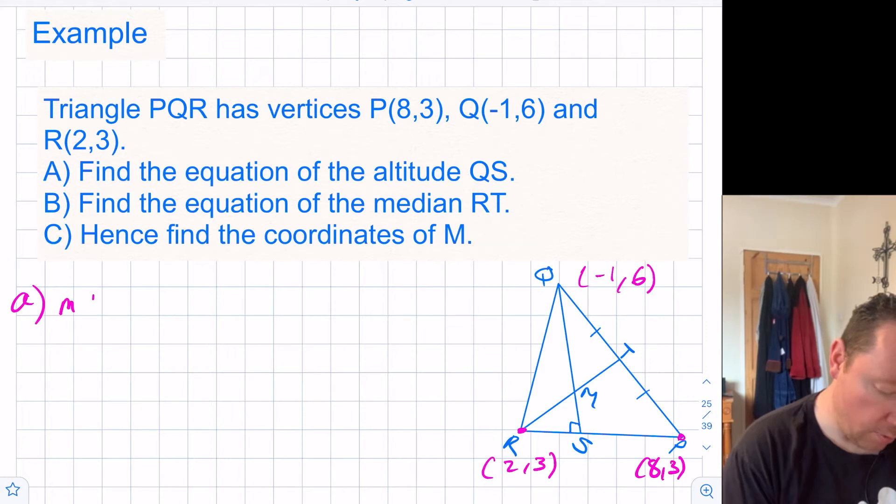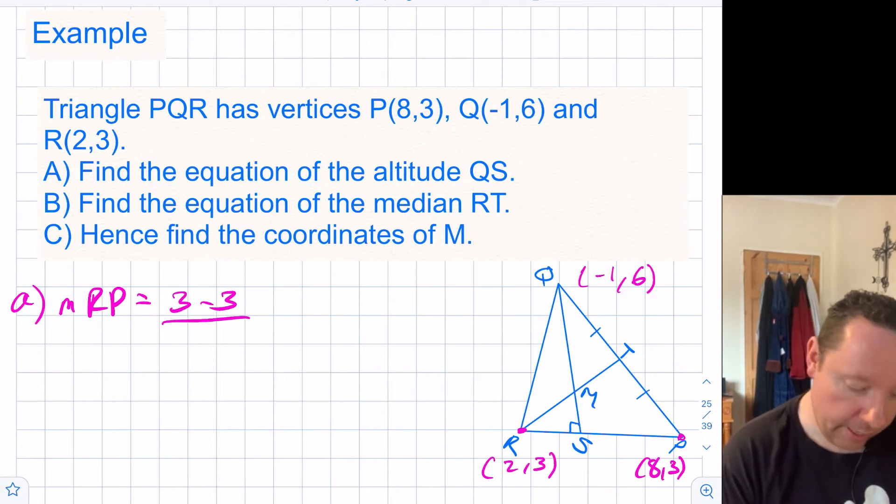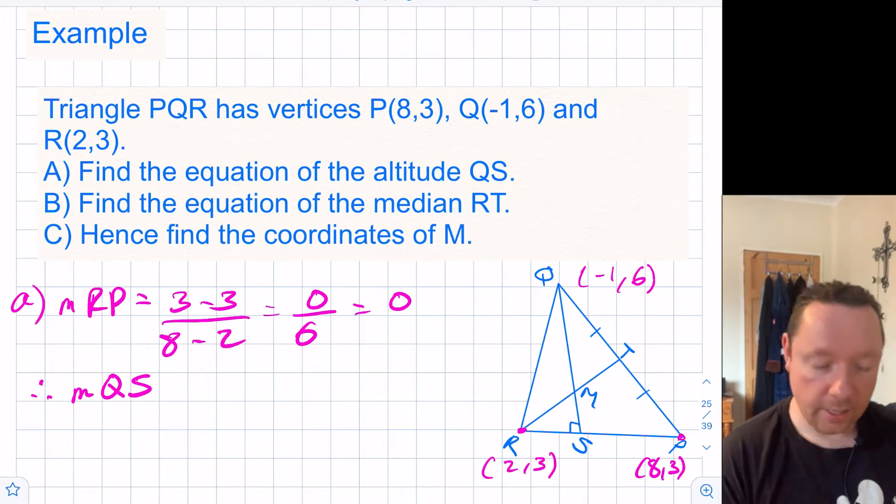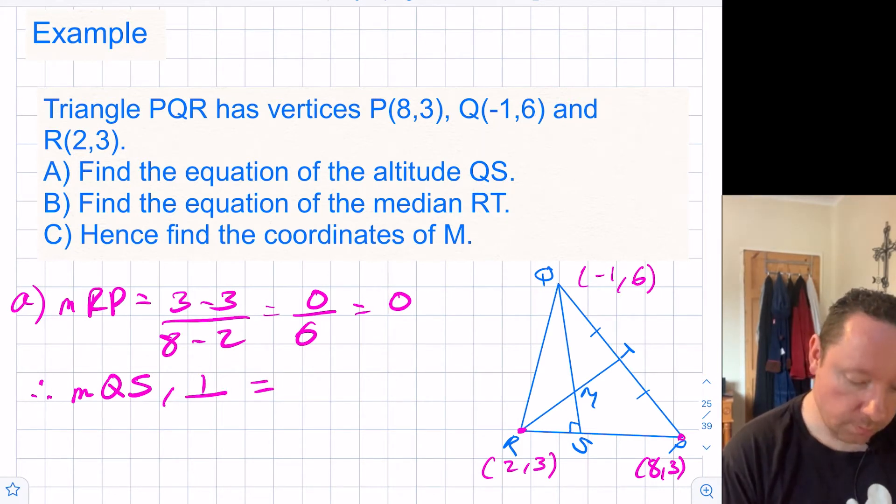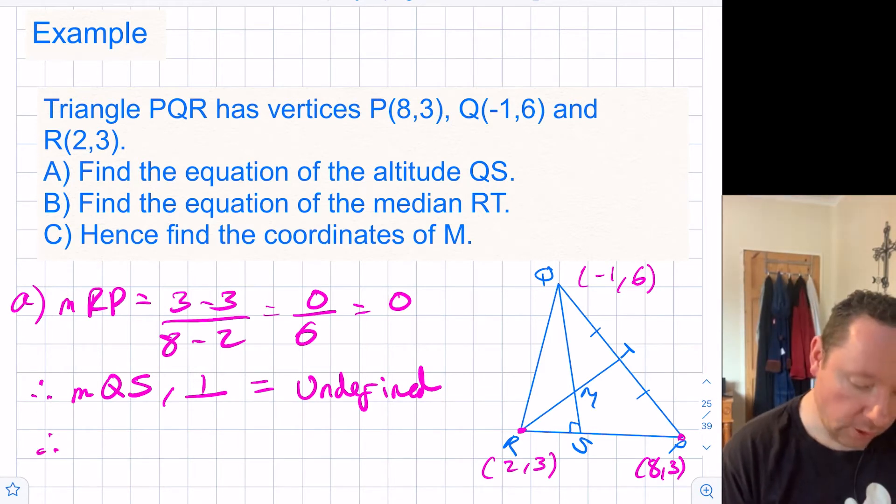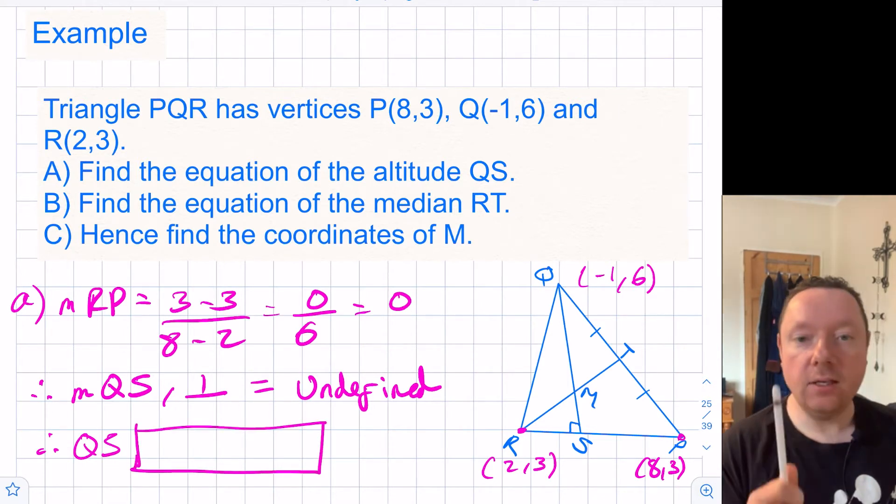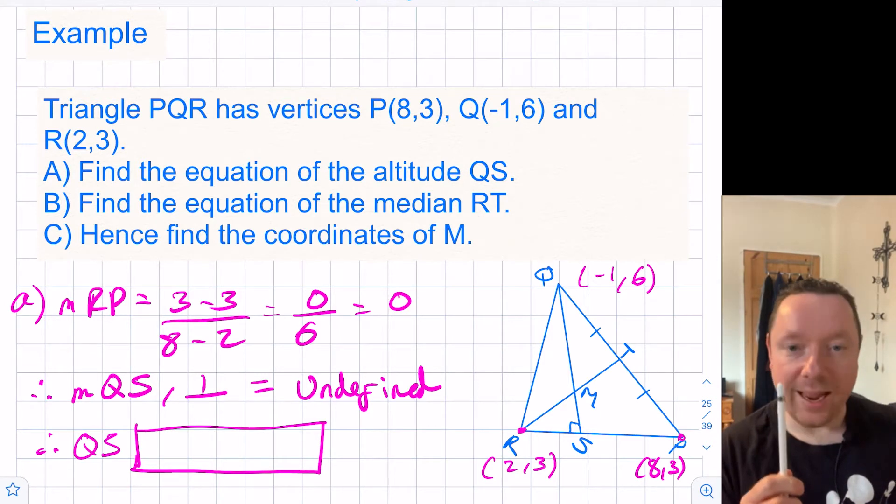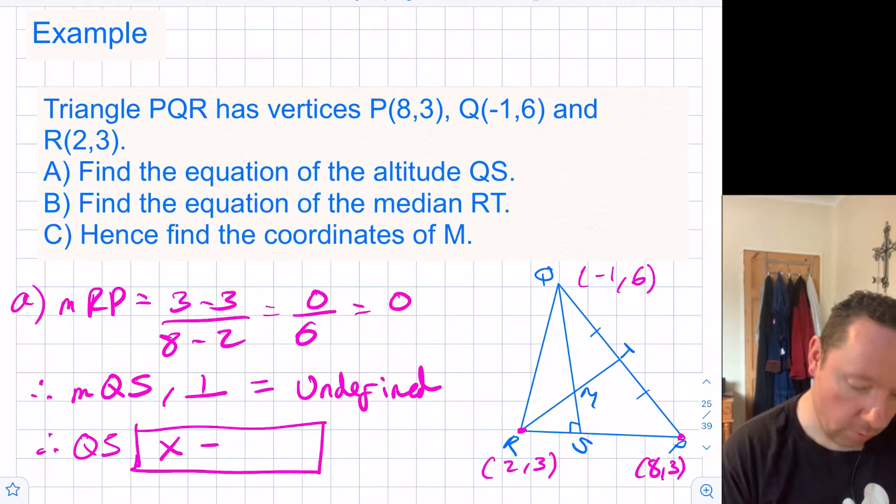Let's start with part A: find the equation of the altitude QS. We need the gradient between R and P. The gradient is 3 minus 3, which is 0, over 8 minus 2, which is 0 over 6, equals 0. Therefore the gradient of QS, which is perpendicular, equals undefined in this case. Usually it's m1 times m2 equals minus 1, but a horizontal of 0 means a vertical line is undefined. Therefore the equation of QS is x equals -1, since Q is at -1.